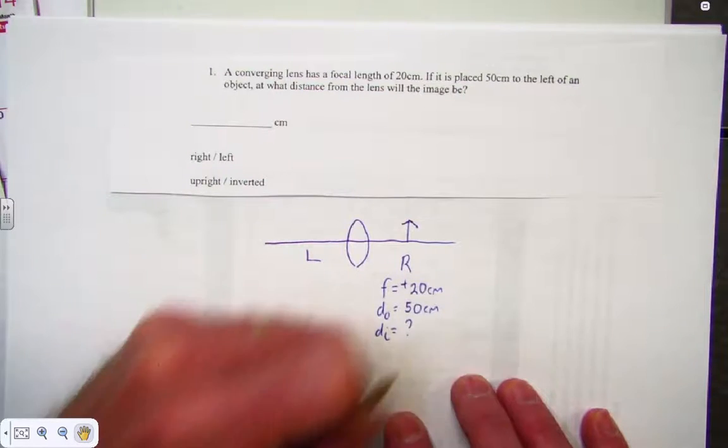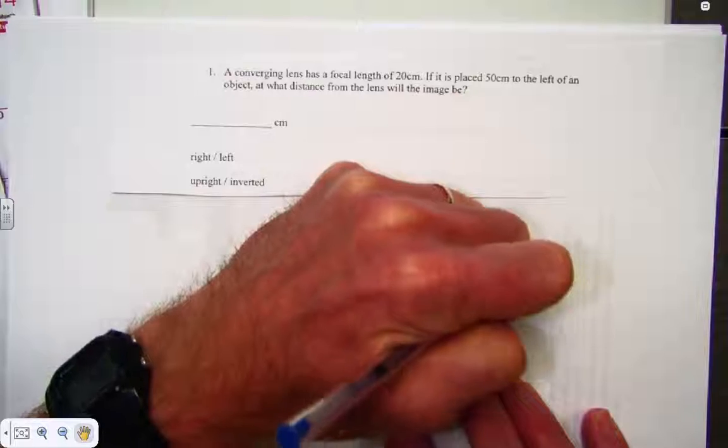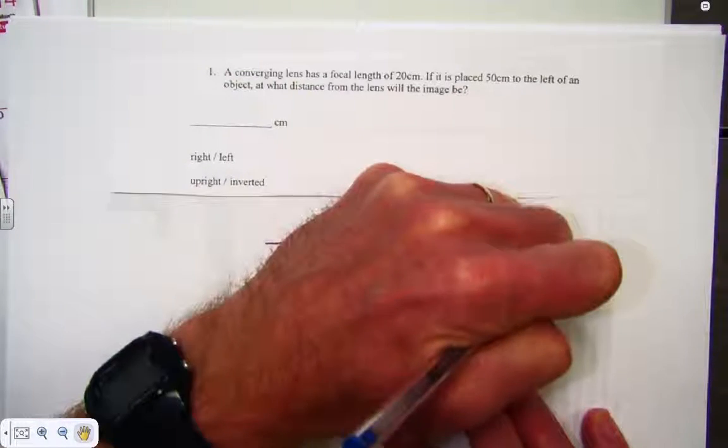To solve this, we need to use the lens measurement equation: 1 over f plus 1 over do plus 1 over di.